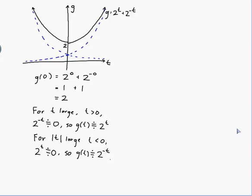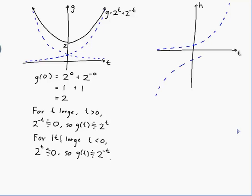Now let's look at h. Here is the t-axis again and the h-axis. h = 2^t - 2^(-t), so I'll draw 2^t — it crosses at 1 — and what I should really draw is minus 2^(-t), because that is the function being added. That looks like the reflection of 2^(-t) in the t-axis. h is the addition of these two, so it is always above the lower curve and always below the upper curve — between those two blue dotted lines.